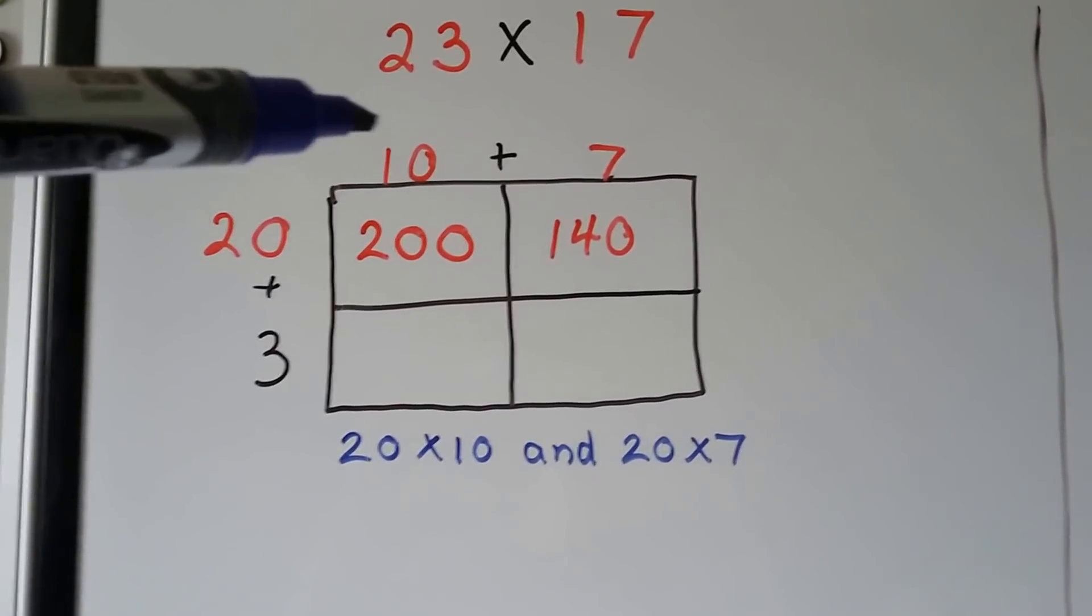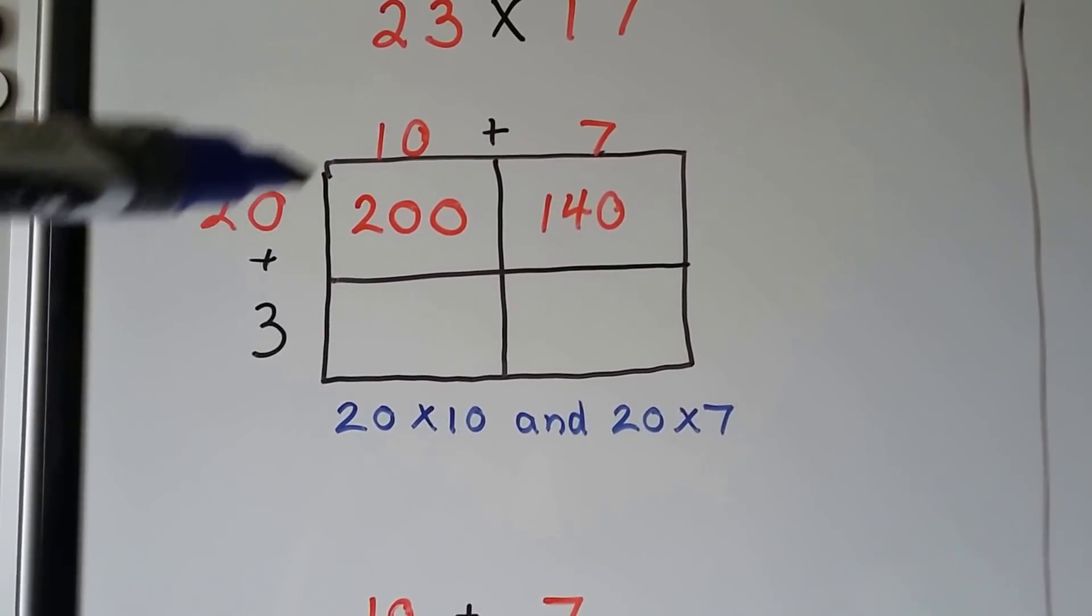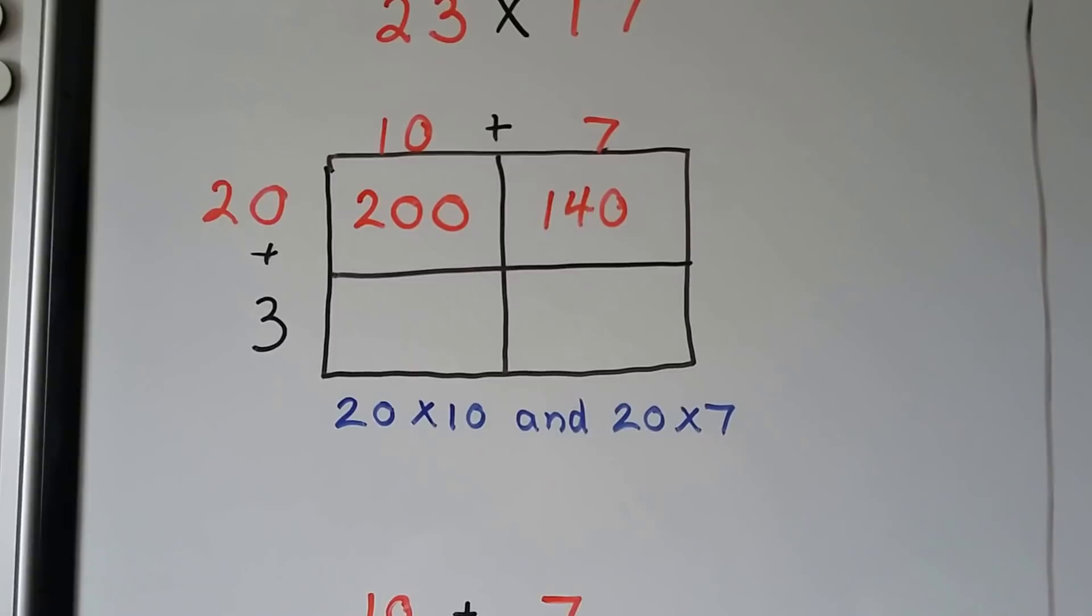We do 20 times 10, which is the same as 2 times 1, which is 2. And we have a 0 and a 0. So we have a 2 and a 0 and a 0. We have 200.